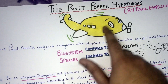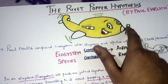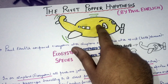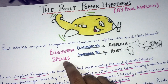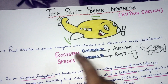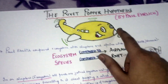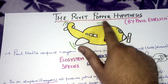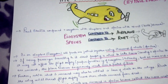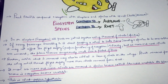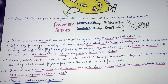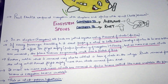As more and more rivets are removed, the plane becomes unstable — meaning as more and more species become extinct, the ecosystem will become unstable. You can pause the video and write down the Rivet Popper Hypothesis.